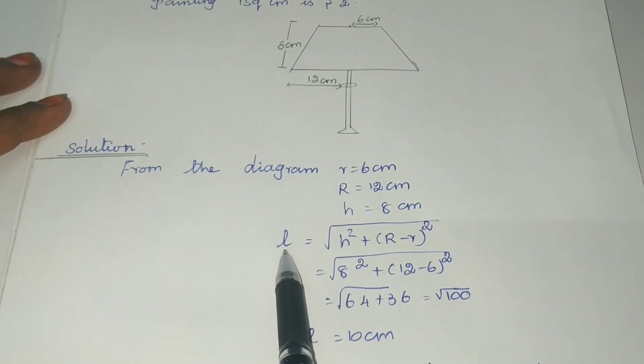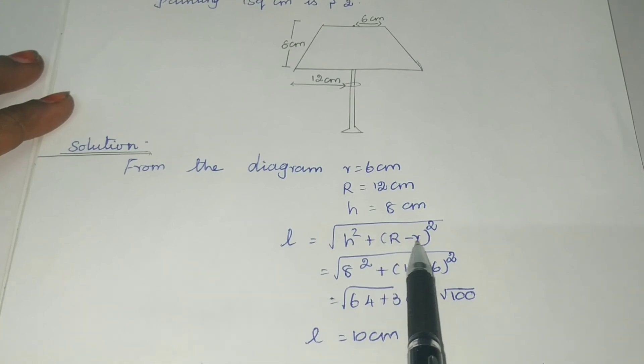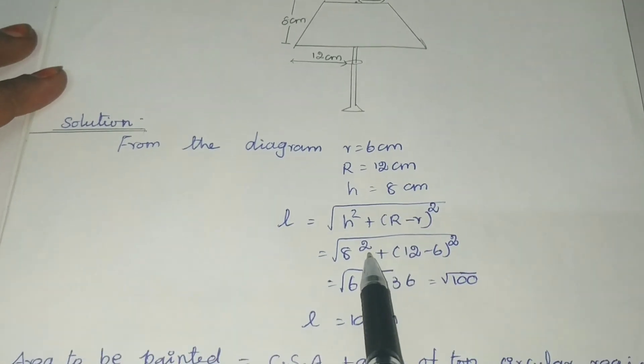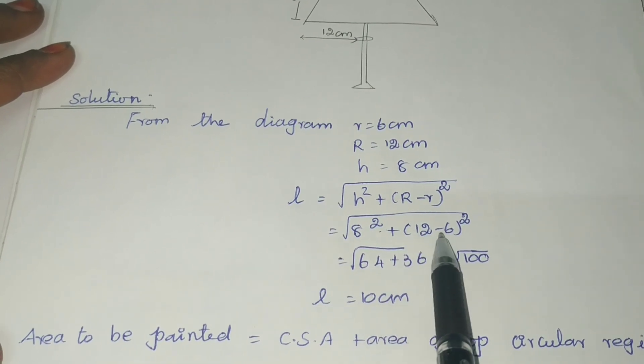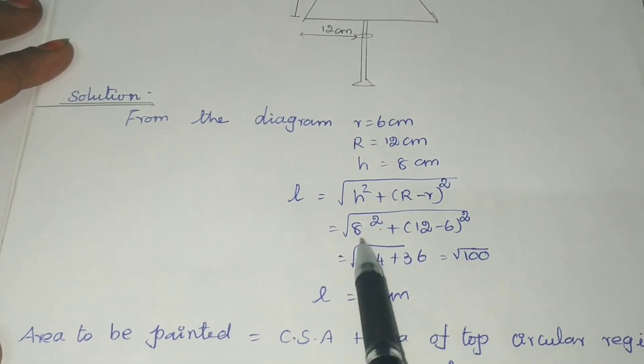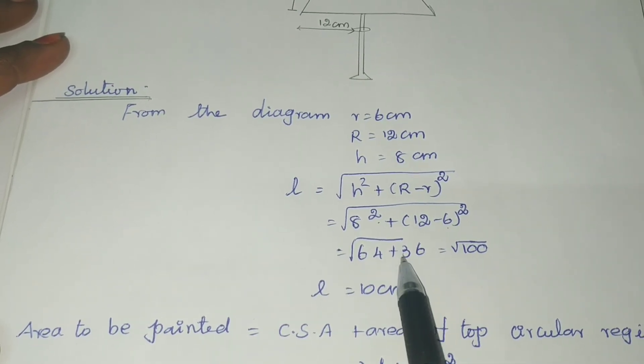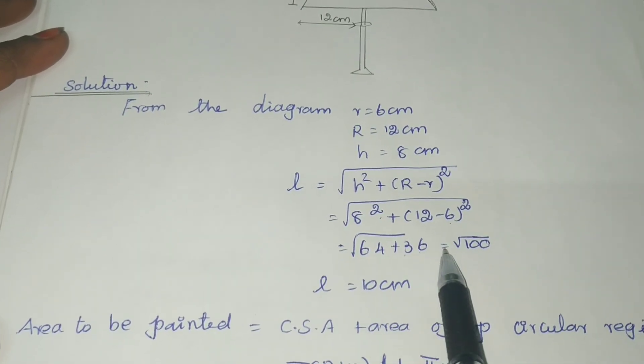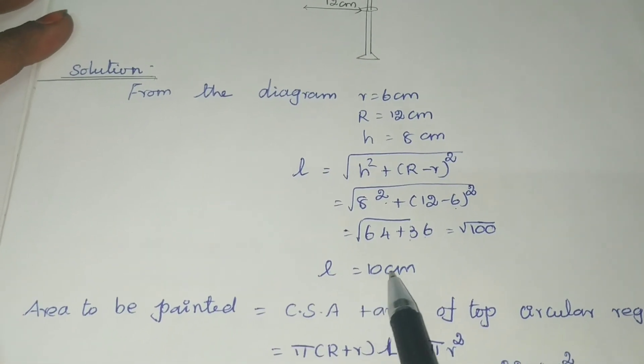To get the slant height, L equals square root of (h² + (R - r)²). Substituting values: L = √(8² + (12 - 6)²) = √(64 + 36) = √100. L value is equal to 10 centimeter.